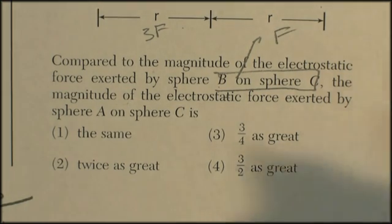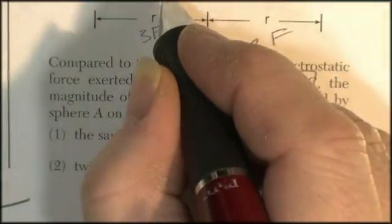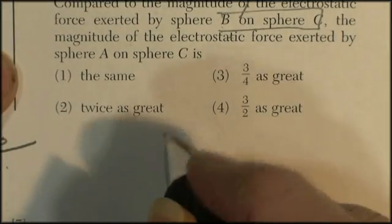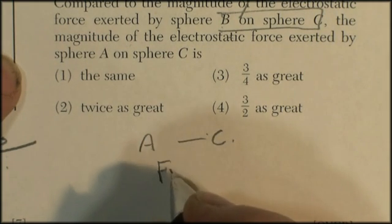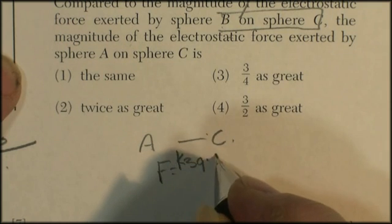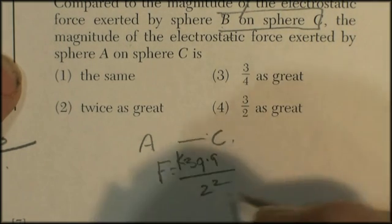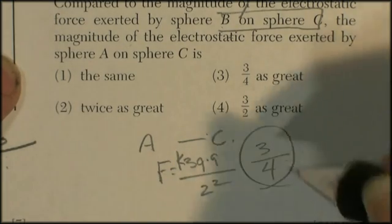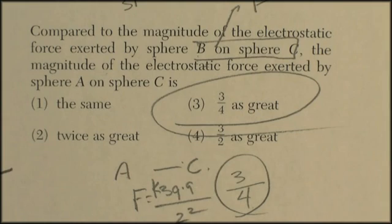Well, now we've got to do a little bit more. So now this is 3, but now this turns into 2. I'm going to do this again. Force a on c is going to be, the force is going to be equal to k times 3q times q divided by 2 squared. So it's going to be 3 over 4. So it's going to be 3 fourths as much, which as it turns out, is one of the choices.